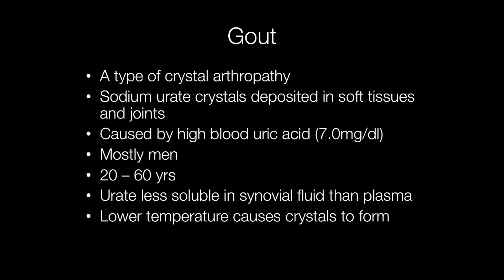Gout is caused by a high blood uric acid — in males, a level of 7 mg or more per deciliter is considered raised, although people with raised levels of uric acid don't necessarily develop gout. Gout usually develops in men over the age of 20, and it is much less frequent in women.